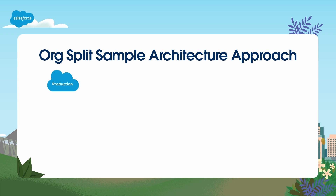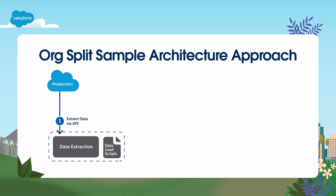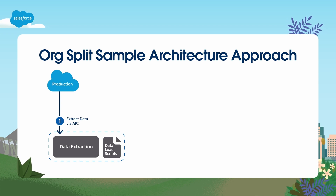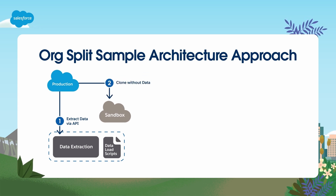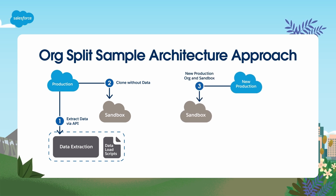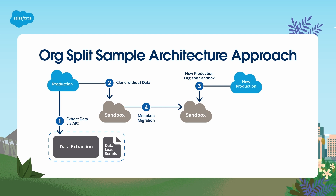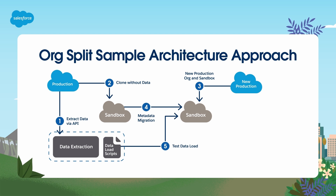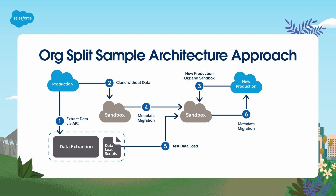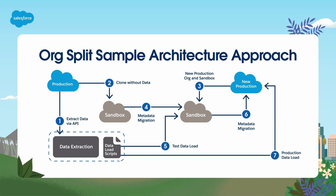Let's take a look at a sample org split approach. First, extract the data from production and develop data transformation and data load scripts — it's recommended to script the process as several tests may be needed before final load. Second, create a sandbox from production to use for split activity and update metadata as needed. Third, request a new production org and create a sandbox for testing the split. Fourth, migrate metadata from the sandbox of the existing org to the sandbox of the new org. Fifth, test the data load into the sandbox for the new org. Sixth, migrate metadata from the sandbox to the new production org. And finally, load the data into the new production org.